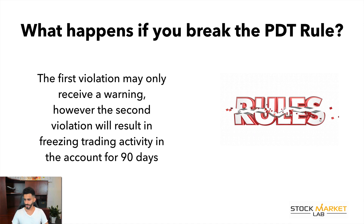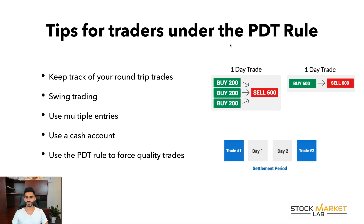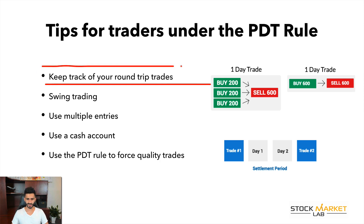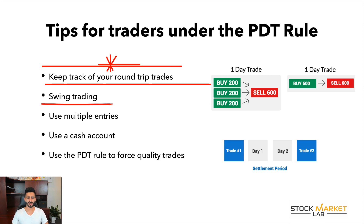What are some tips for traders under the PDT rule? Number one: keep track of your round-trip trades. A lot of platforms, especially TD Ameritrade, track them for you — they tell you how many you have left. Make sure you keep track of your trades because you do not want to get hit with a violation and be unable to trade for 90 days.